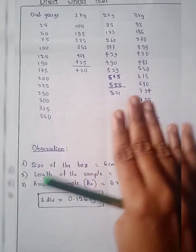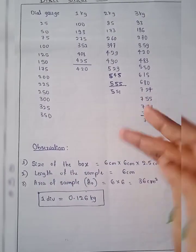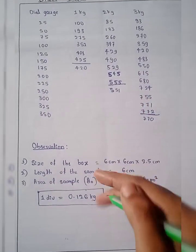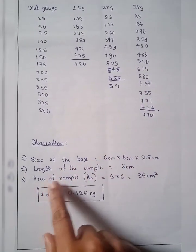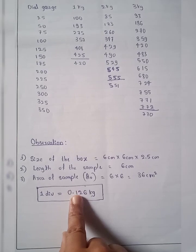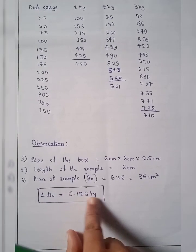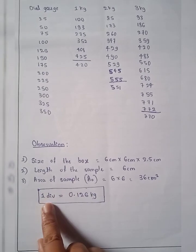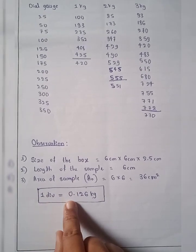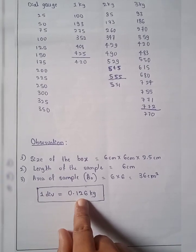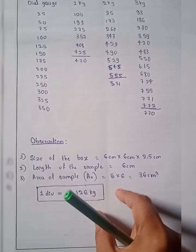The calibration of the sample: 1 division is equal to 0.126 kg. This is the standard value — 1 division equals 0.126 kg.